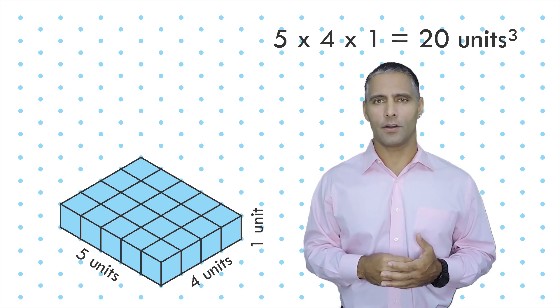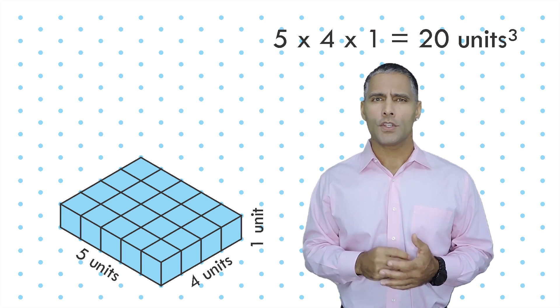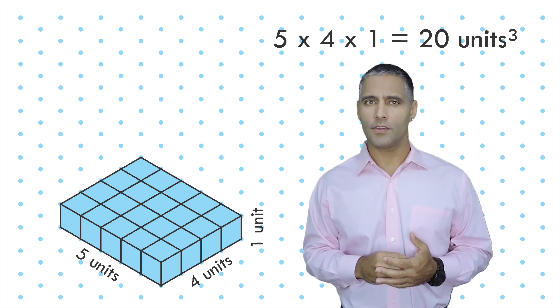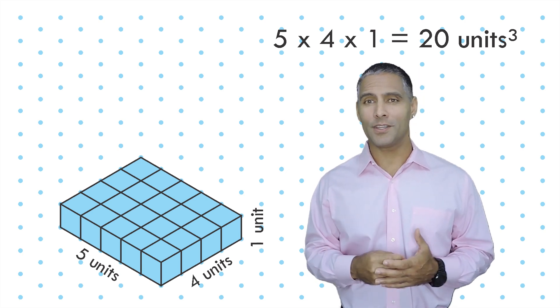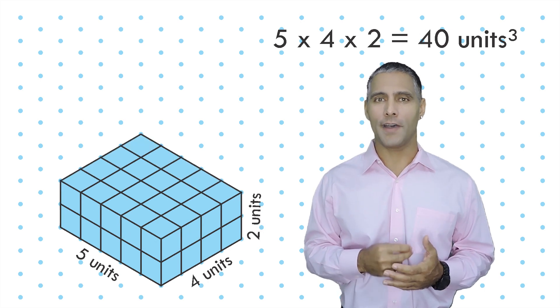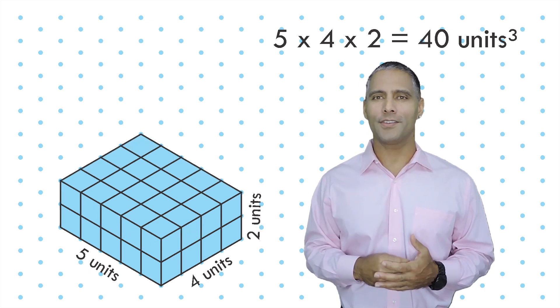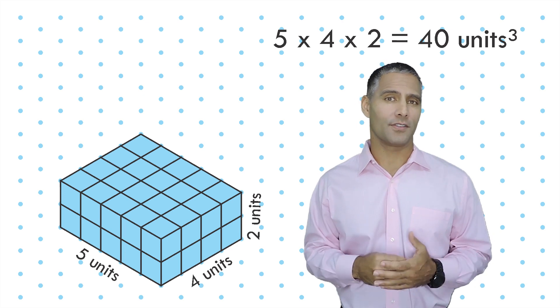Now let's add another layer on top of this layer. So if we stack another twenty cubic units on top of the first layer of twenty cubic units, we now have a five by four by two configuration, which would give us a volume of forty cubic units.